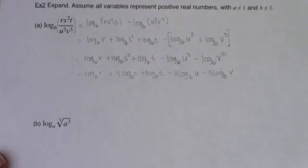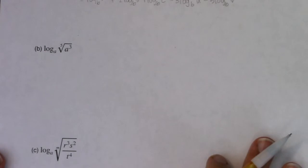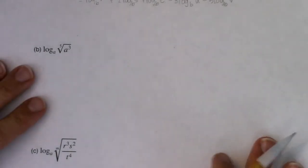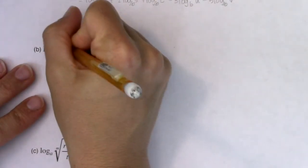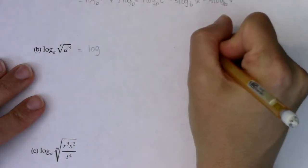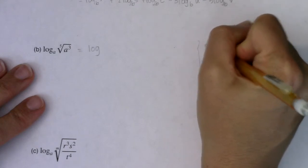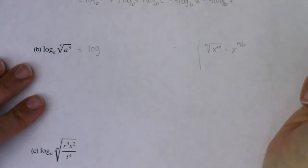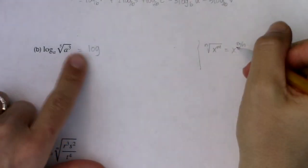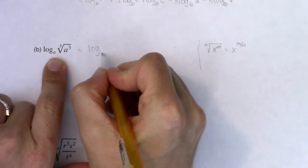Let's take a look at part b. Part b gives us log base a of the fifth root of a cubed. So as I go to expand this, I'm going to rewrite my radical with a rational exponent. When you have the nth root of x to the m, it's x to the m over n power. I have the fifth root of a cubed, so this will be log base a of a to the three fifths — the index becomes your denominator, and the exponent becomes your numerator.